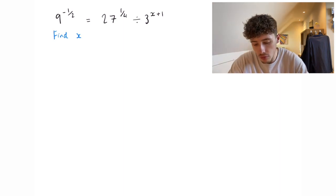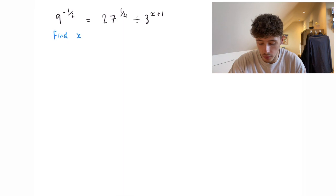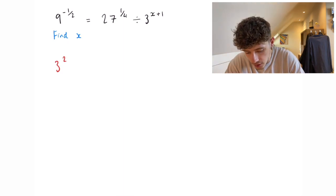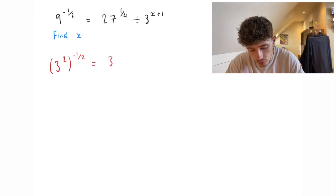So we're going to rewrite each of those numbers as a power of 3. I'm going to write 9 as 3 squared, keeping it in the brackets and then to the power of minus a half, equals 3 cubed to the power of a quarter divided by 3 to the x plus 1.